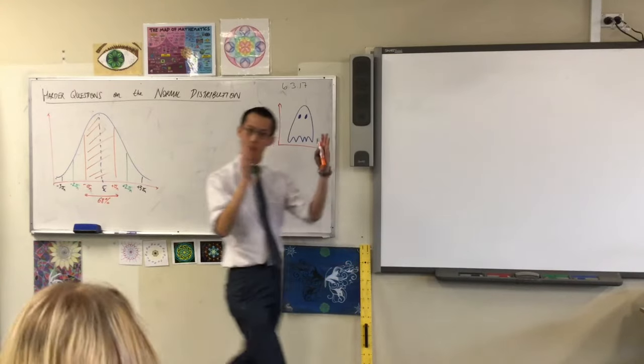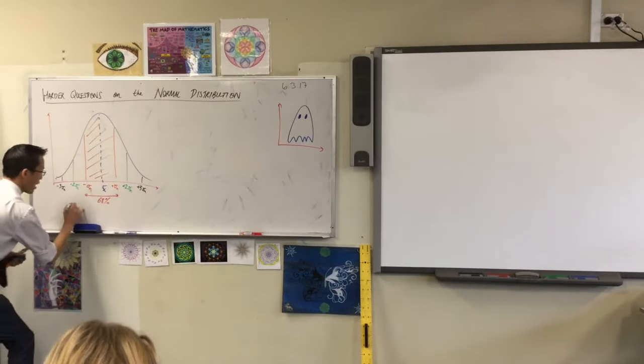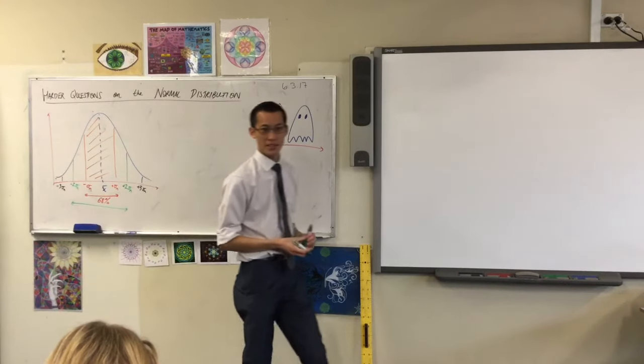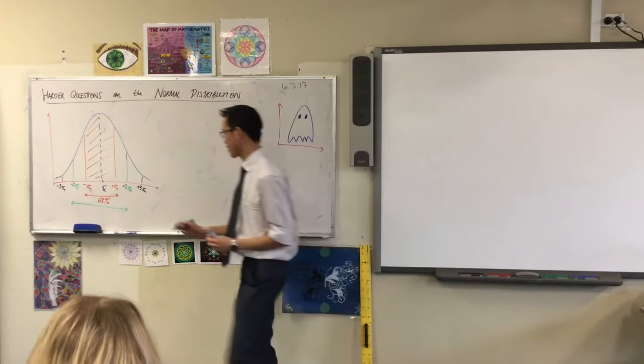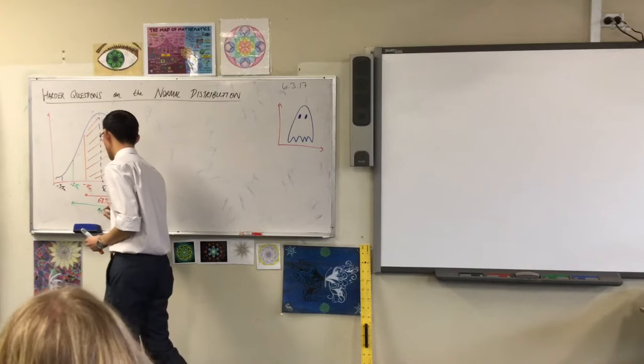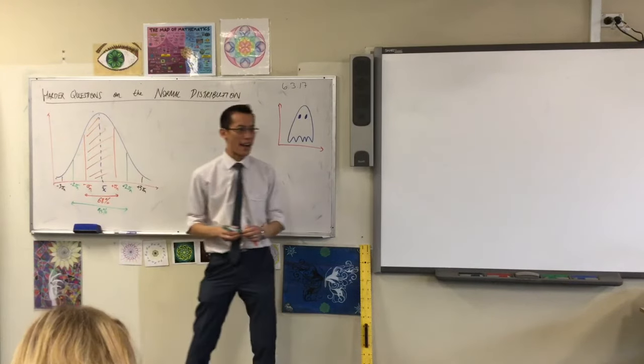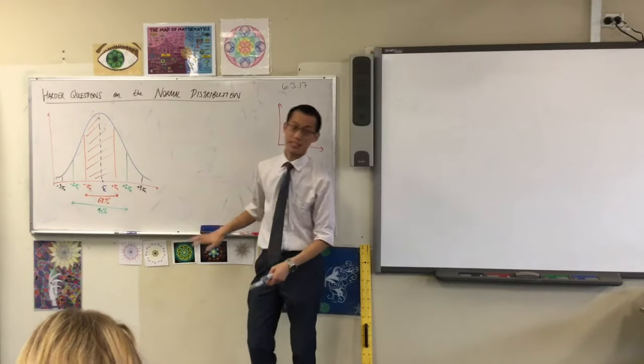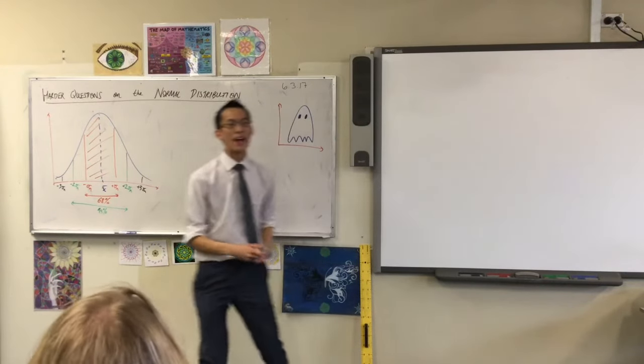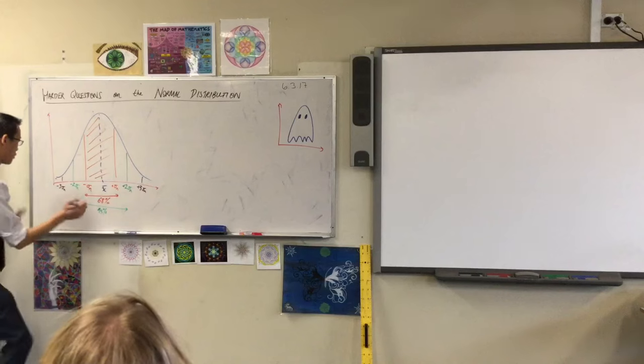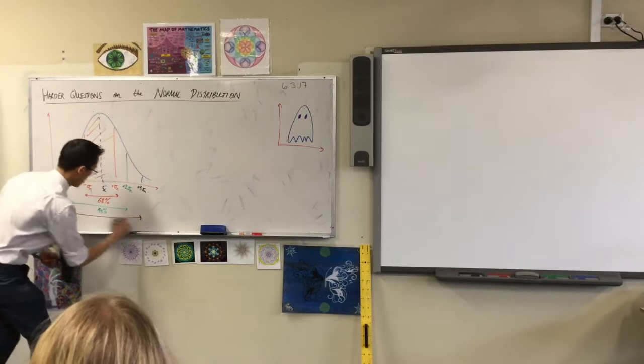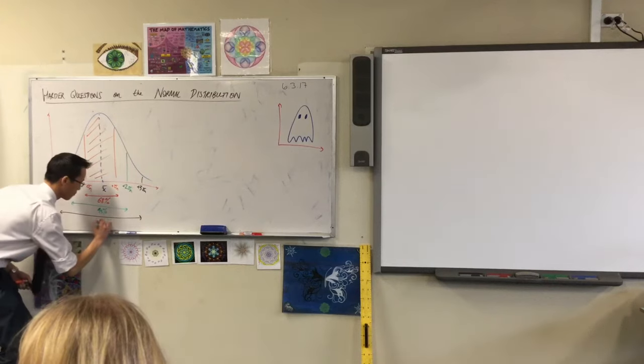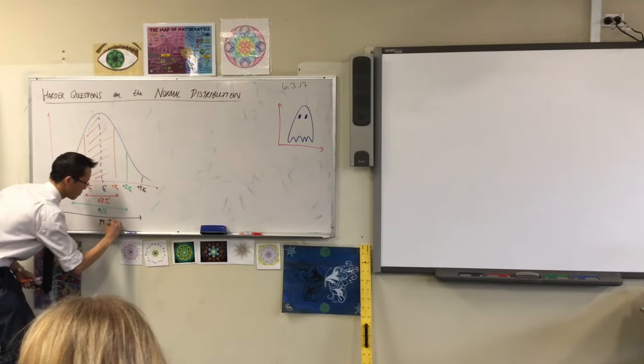If we go out two standard deviations, if I go out this far, how much of the population do we get this time? 95, very good. So that 95 obviously includes the 68 we already measured, and then the last one that we go out, go as far as you can, this is the 99.7, very good.